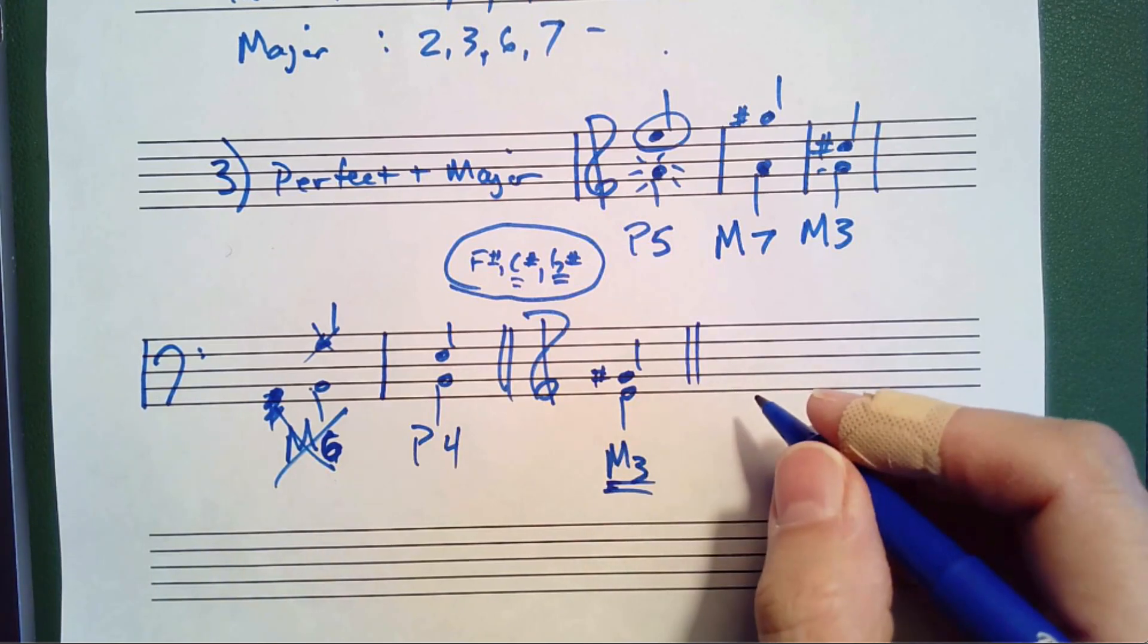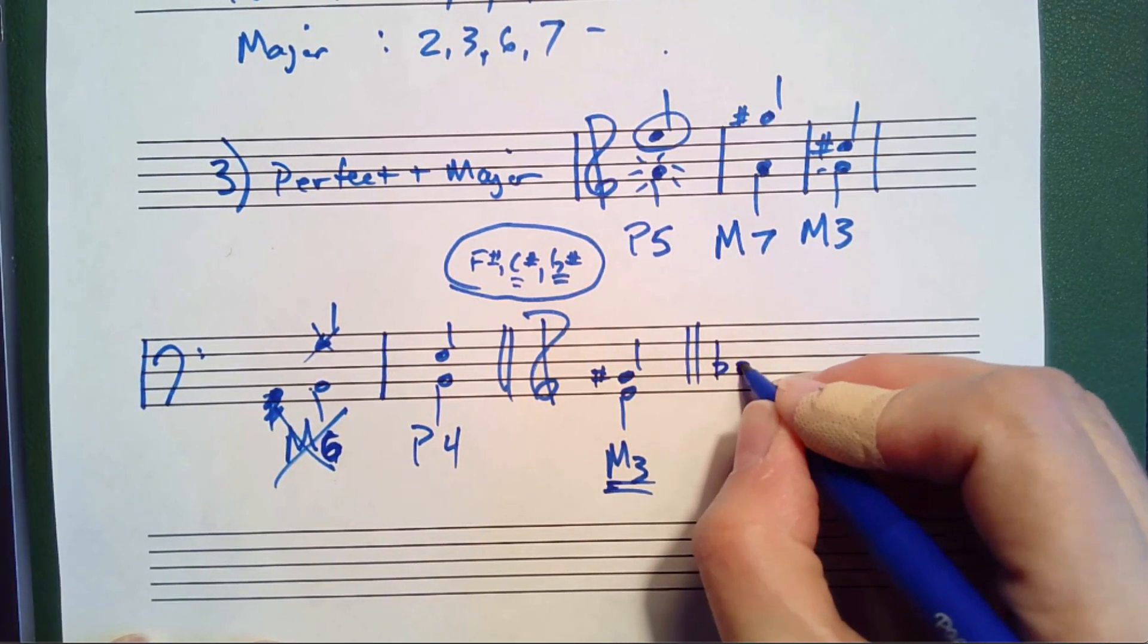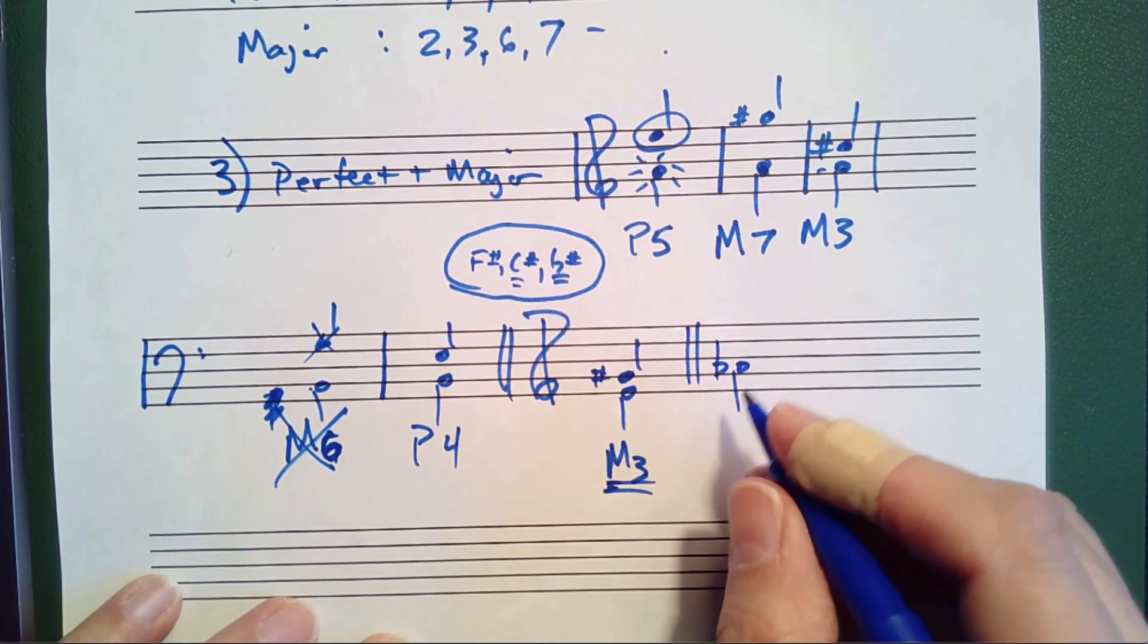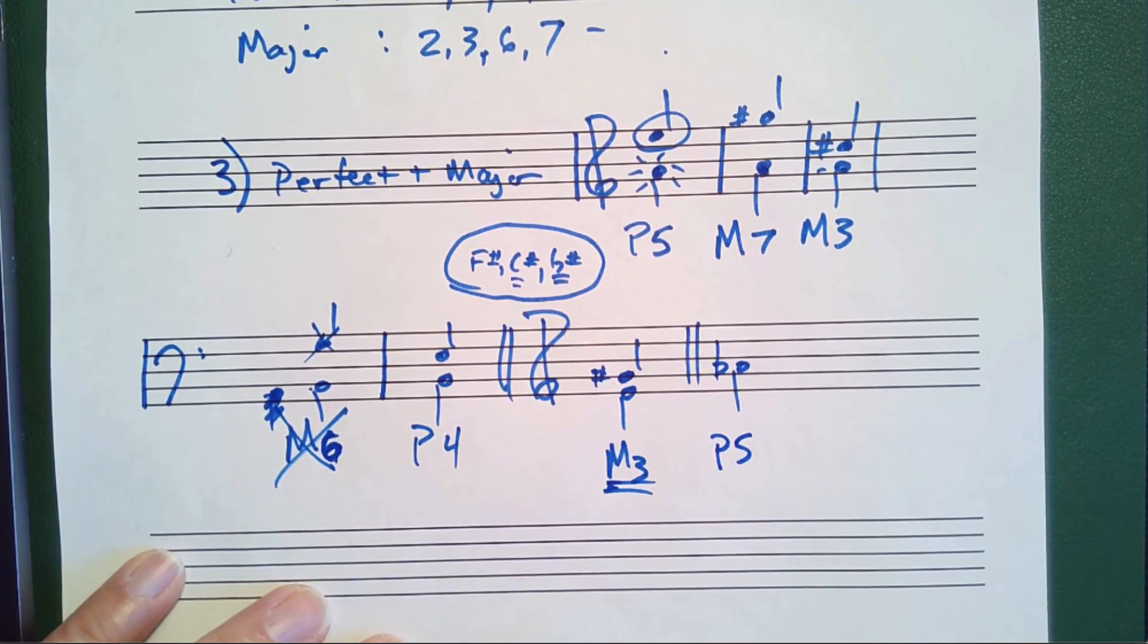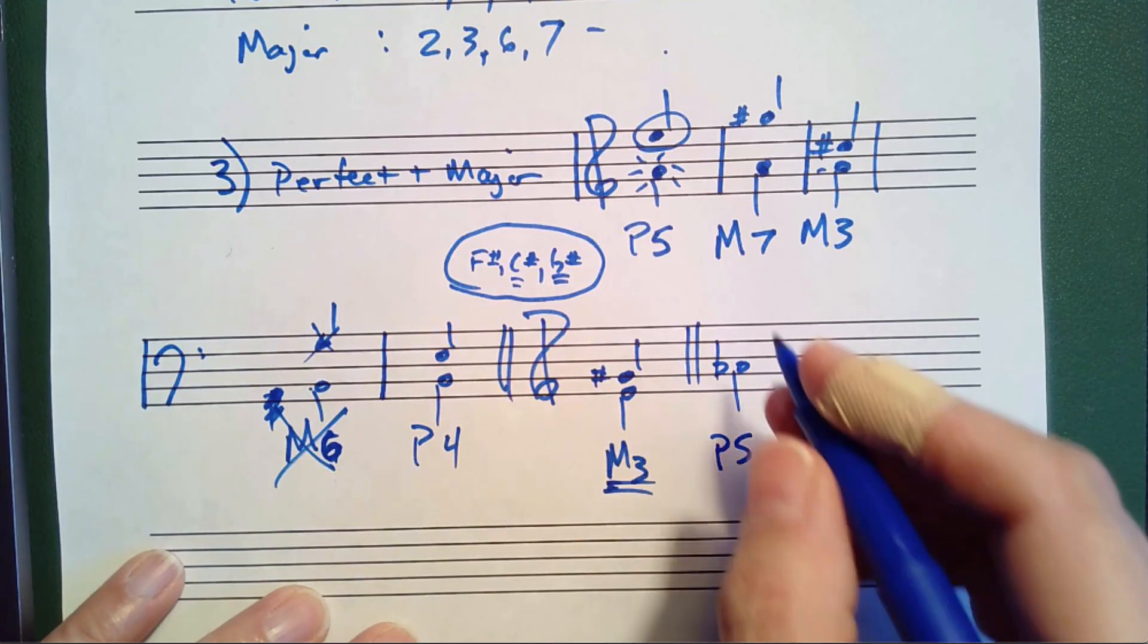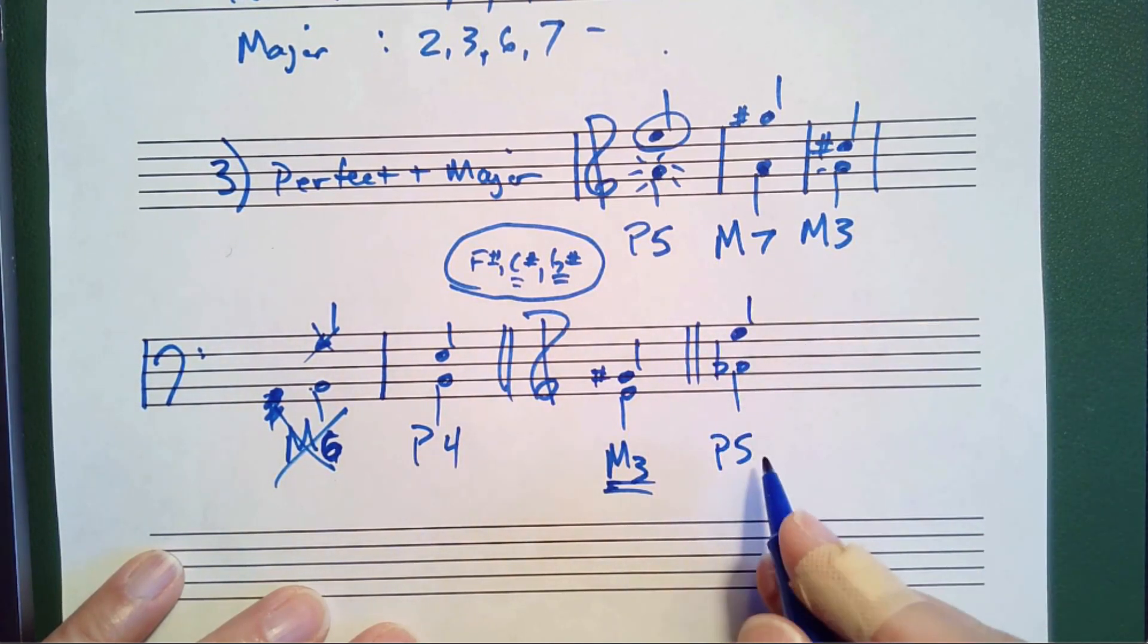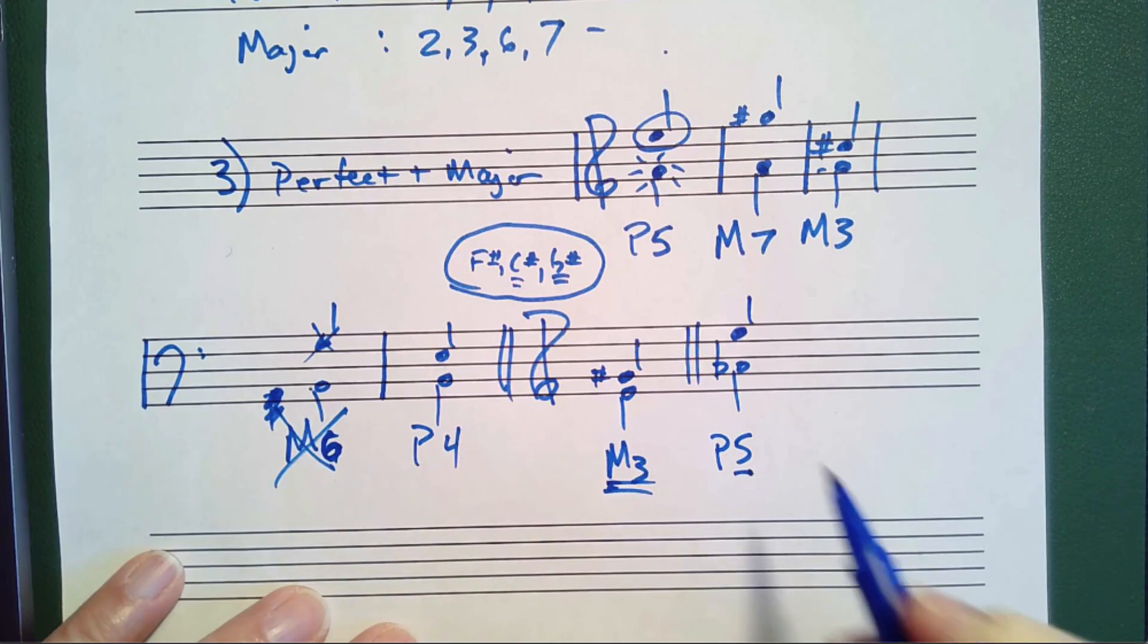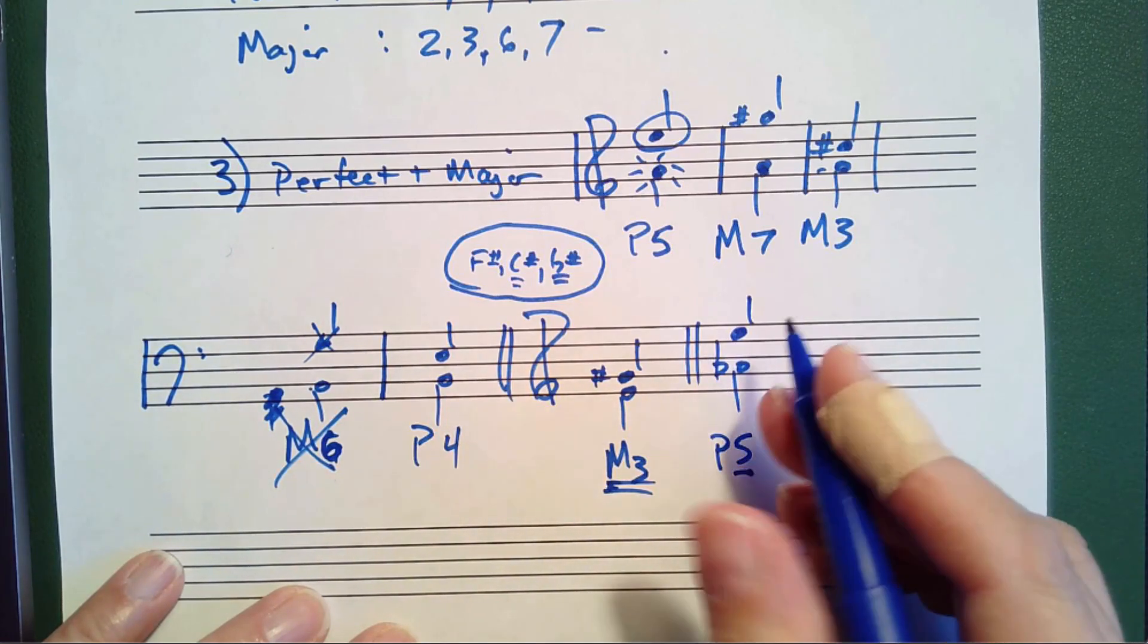Let's do one more. Let's do A flat, and we want a perfect fifth above A flat. So we count A, B, C, D, E. That gives us the fifth.